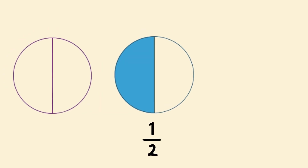Here we have one whole circle. If we take this circle and cut it into two equal parts, it would look like this. You can see that one part out of two has been shaded. This is represented by the fraction one-half.